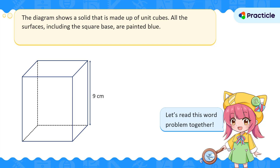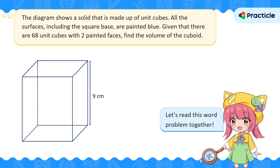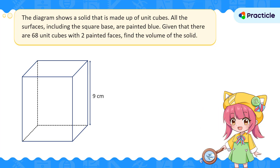So imagine the top of this, the four sides around it, and the bottom in blue. Given that there are 68 unit cubes with two painted faces, find the volume of the solid. In case any of you are wondering what a unit cube is, it's just a simple little cube with a length, breadth, and height of 1 cm.